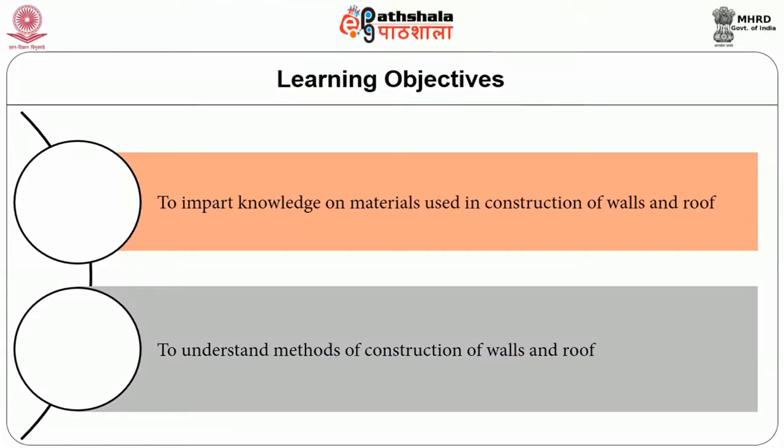The process involves the construction of substructure and superstructure. Substructure includes the construction of foundation, and superstructure includes the construction of wall, floor, roof, door, window, etc. This chapter discusses the function, materials, types, and method of construction of wall, roof and ceiling.